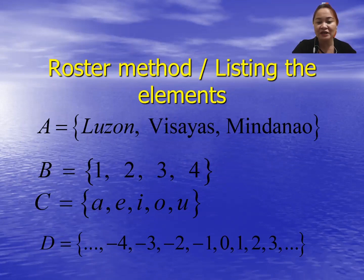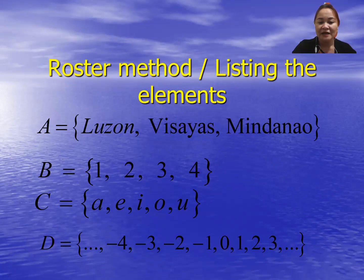Set B is the set of counting numbers greater than or equal to 1 but less than 5. So we have counting numbers 1, 2, 3, and 4. Set C — you can name the set by any capital letter, and the elements must be separated by a comma. The set of vowels in the English alphabet: A, E, I, O, U.